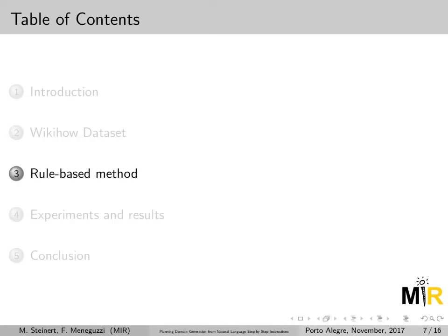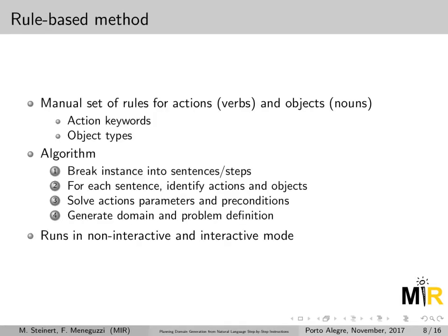Talking about a rule-based method, it requires as input a set of rules for actions, where actions are usually identified by verbs within sentences, and a set of rules for objects, usually represented by nouns. For each action we have a set of keywords that may trigger that action, and for each object we have an object type assigned to it.